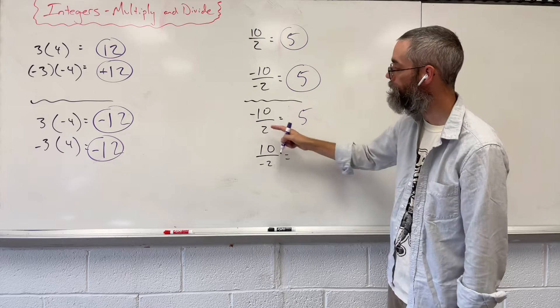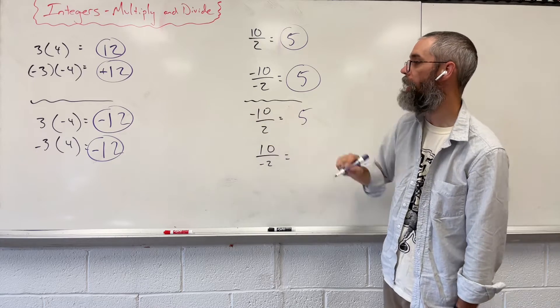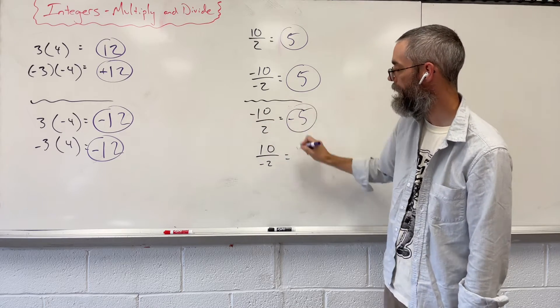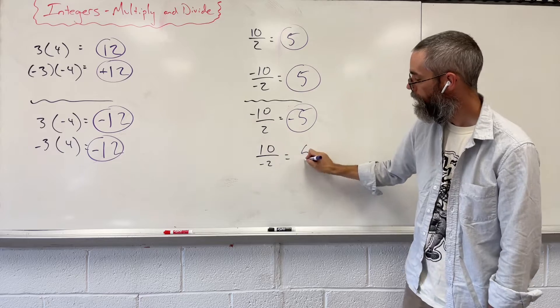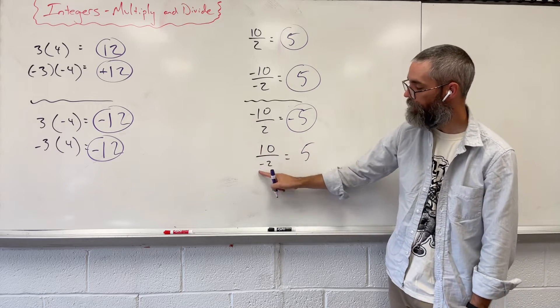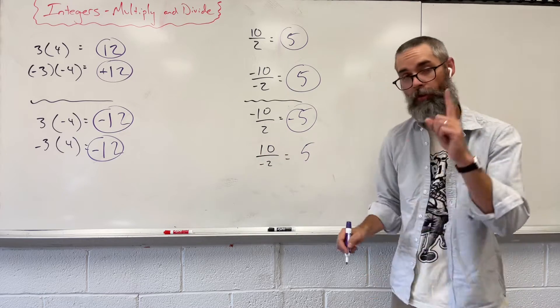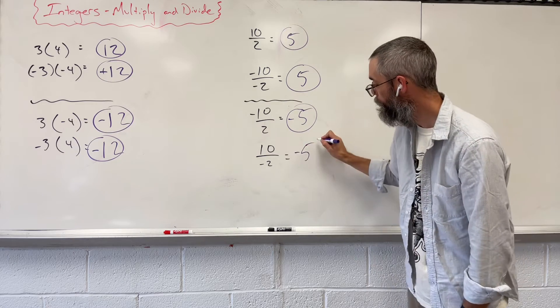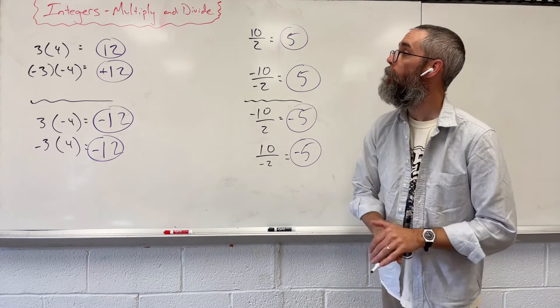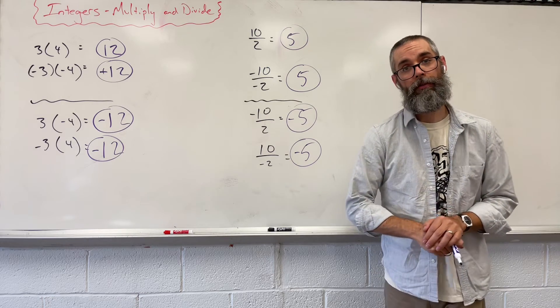10 and 2 we know is 5, but now we have a different sign. Different means negative. We have 5 again, but this time a positive and a negative. It doesn't matter. As long as one of them is a negative, my answer stays a negative.